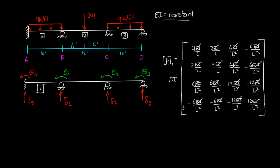So the next step would be to find the k matrix for each one of these elements: elements 1, elements 2, and element 3. And we're actually going to go ahead and do that in the next video. All right, so see you then.